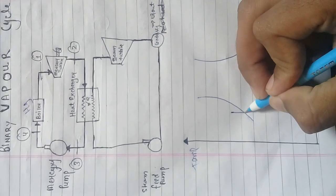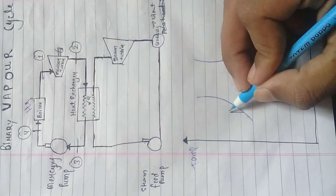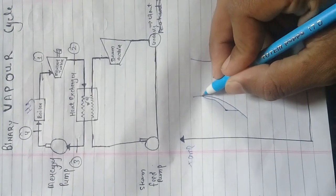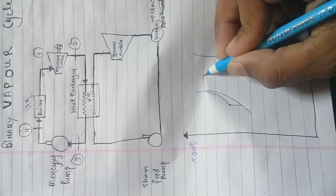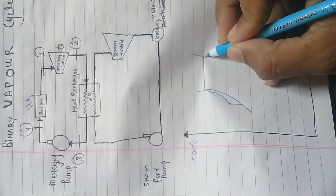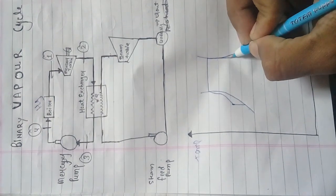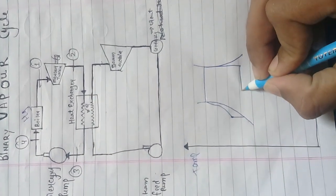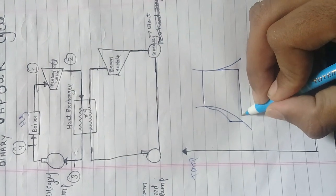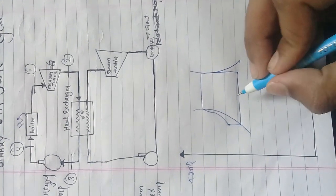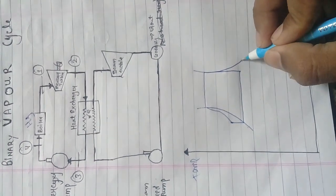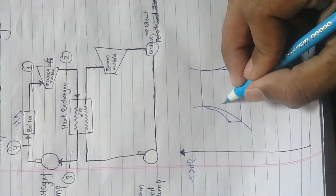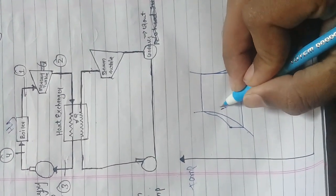This is the feed pump work, and this is the work done by raising the water. This is the boiler work, and then we move downward — this is the turbine work. This is the heat rejected from the heat exchanger, and this is the mercury work — this is for the mercury vapor cycle.